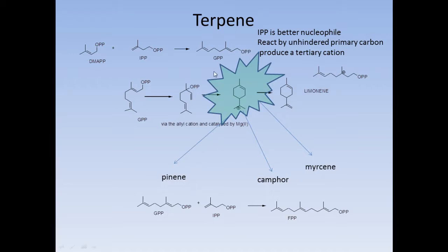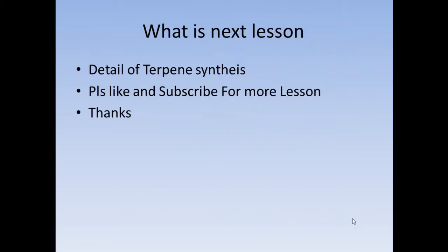Again, GPP reacts with IPP as a nucleophile, producing FPP, which is for sesquiterpene synthesis, and the sequential addition of more IPP units continues for steroid synthesis. I will discuss this later in coming tutorials. This is just an introduction to the biosynthesis of terpenes. Please like and subscribe this channel for the coming tutorials in which detailed terpene synthesis will be covered. Thanks.